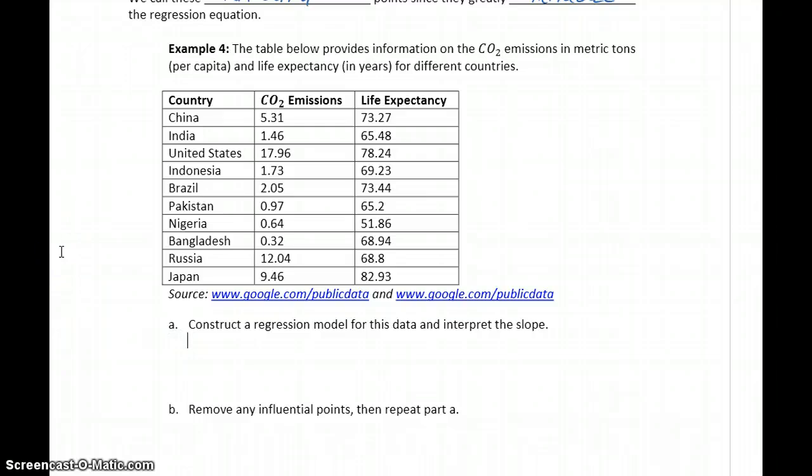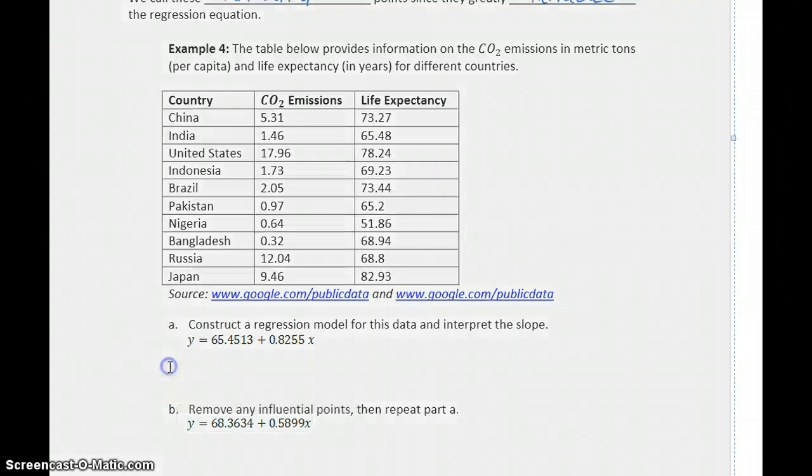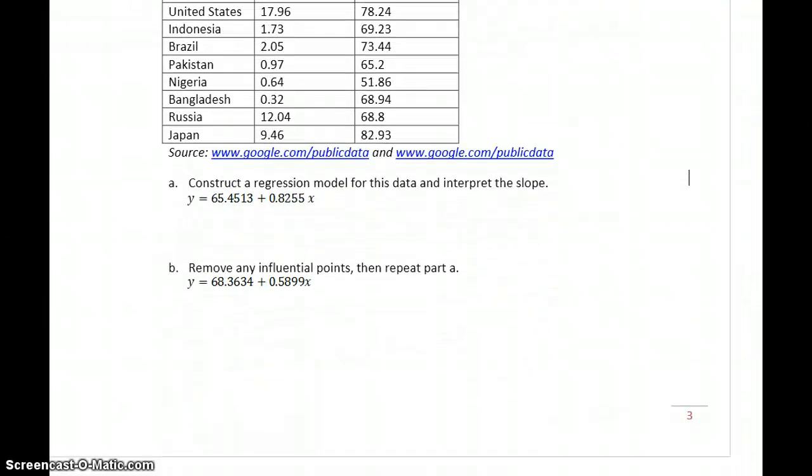So, the original model that we would have constructed would be Y equals 65.4513 plus 0.8255X. After removing our first influential point, this would change to 68.3634 plus 0.5899X. So, we have, for instance, two different regression equations to consider.